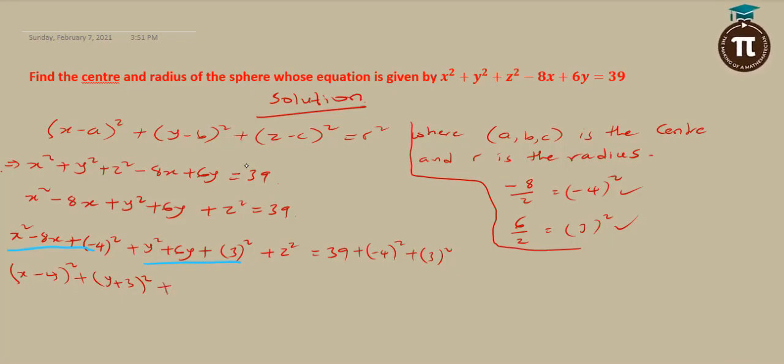I just have z here. This is z. Subtract 0 from it because it doesn't change anything. Z minus 0 is just z, so z squared is just z squared. This is equal to 39 plus 16 plus 9.